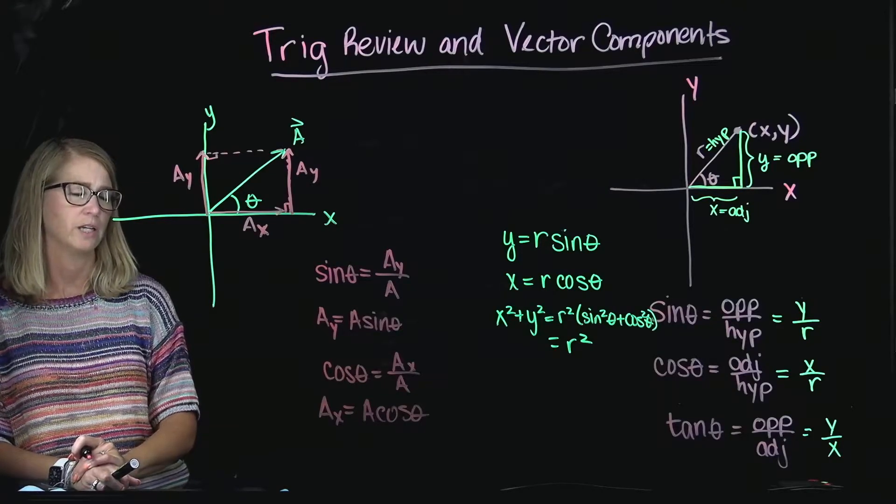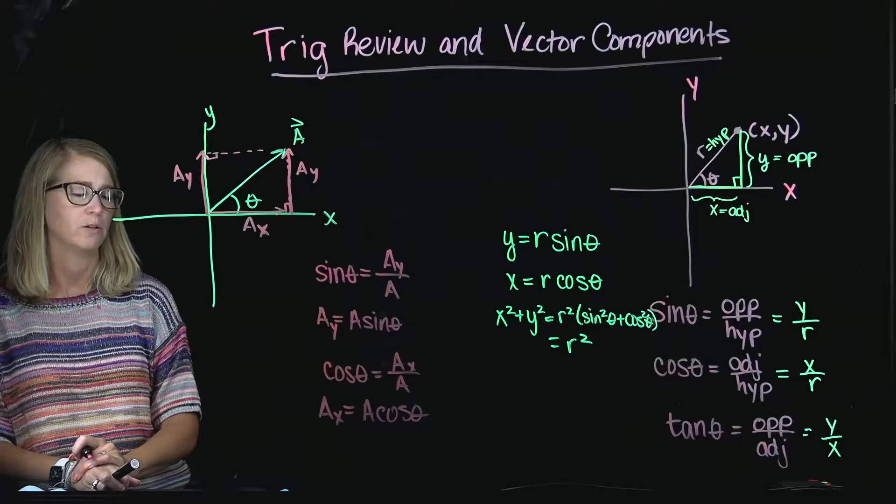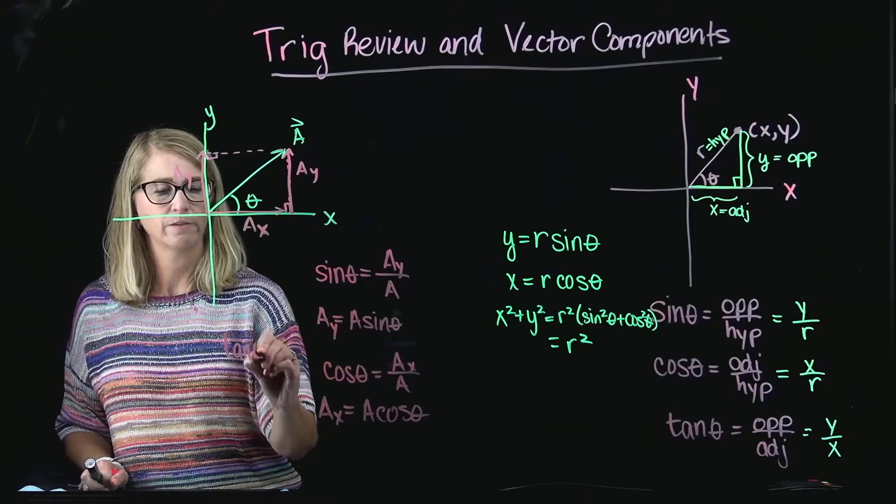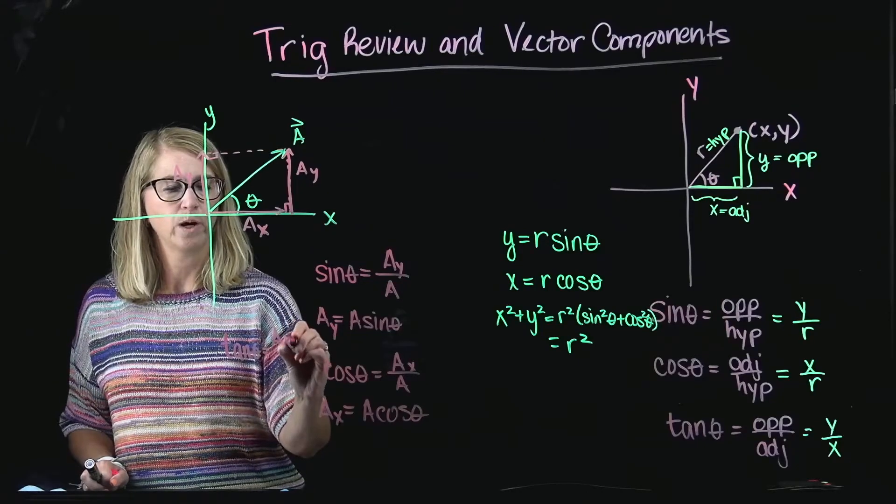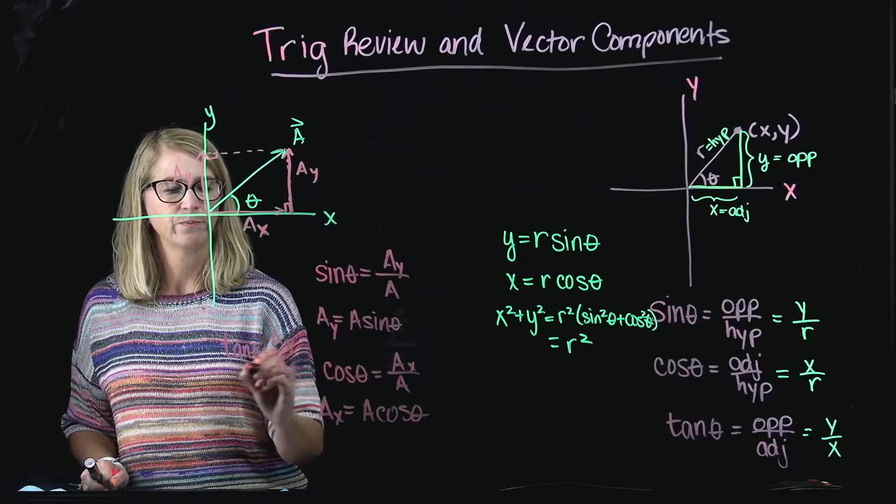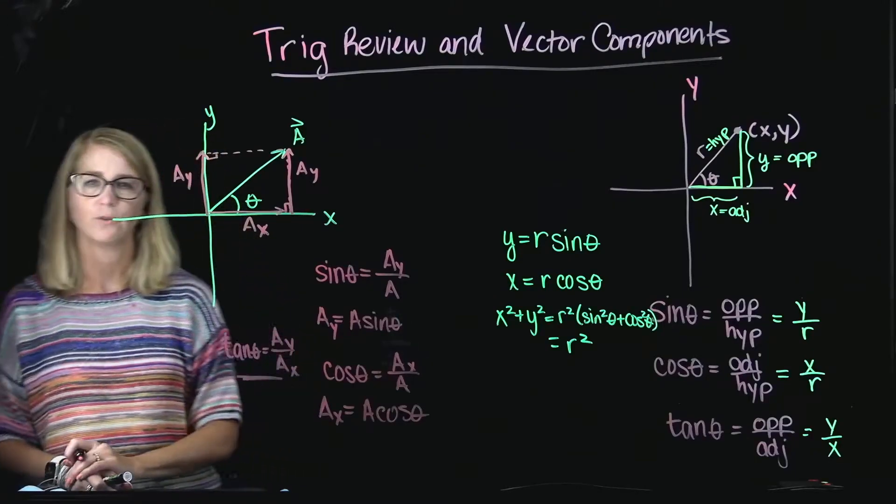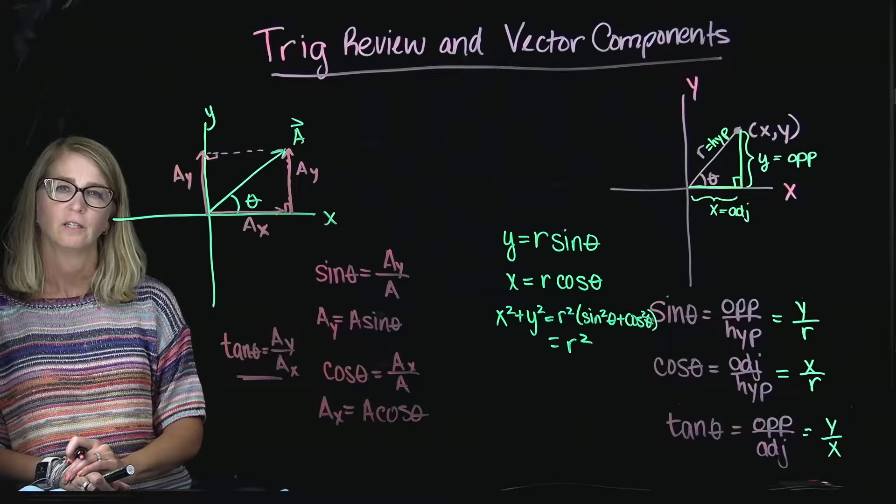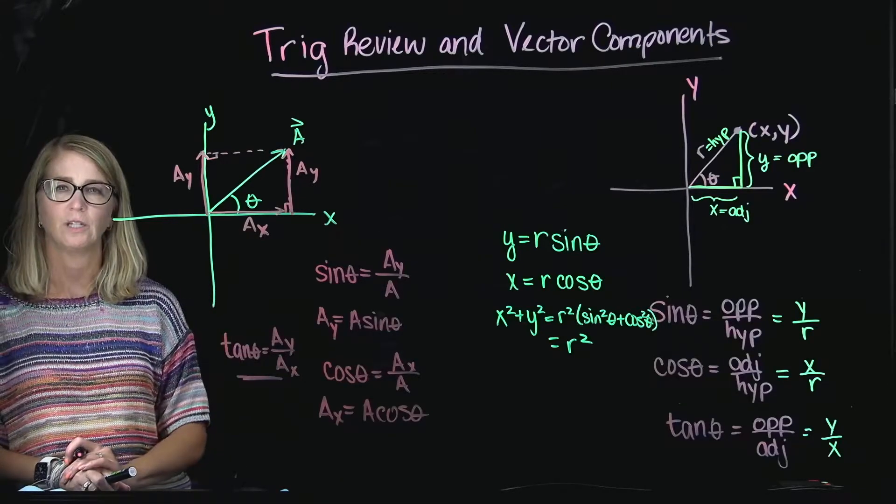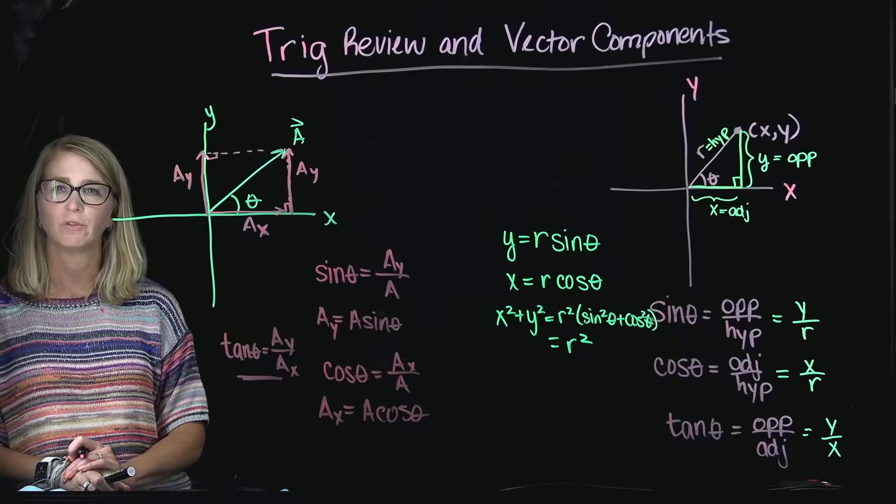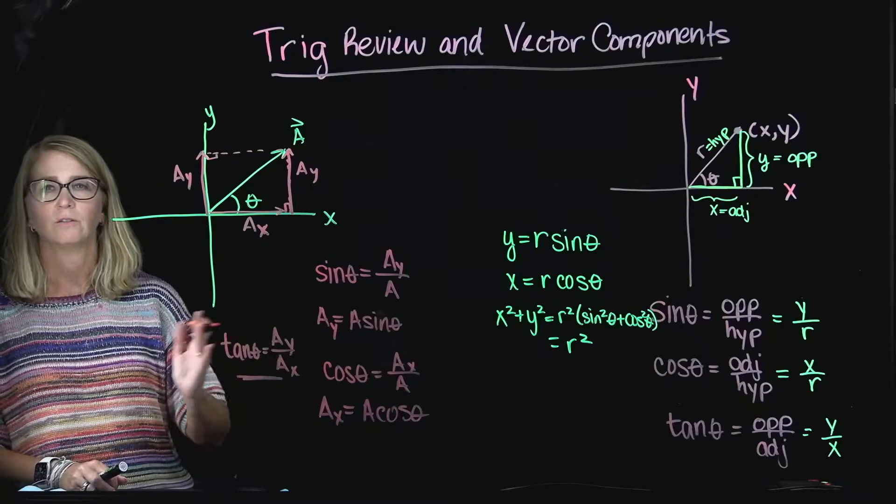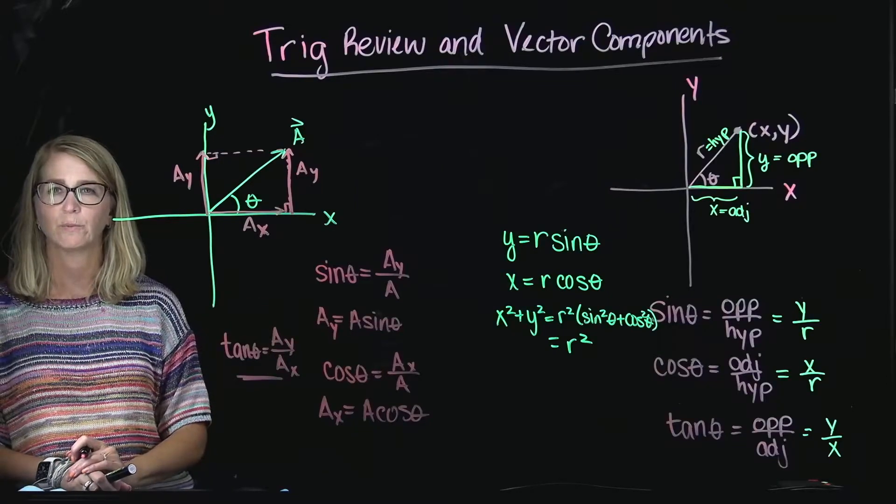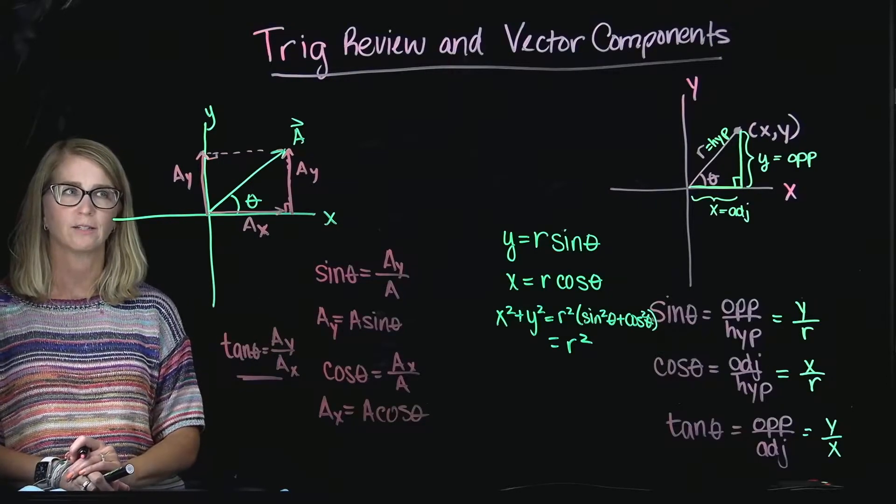Another thing that I might notice is that the tangent of theta is AY over AX. This is something we're going to use later when we add vectors together. And we'll use that to figure out what the angle is of the sum of the vectors, how the direction of the resultant vector is pointing, given its overall Y and X components. But we're not going to do that today.